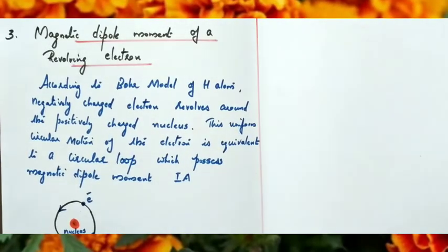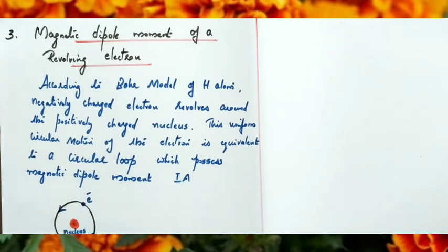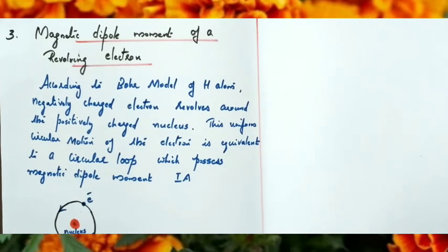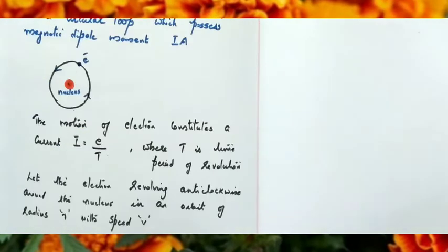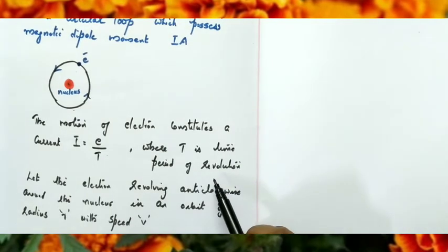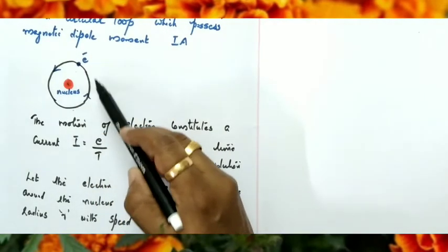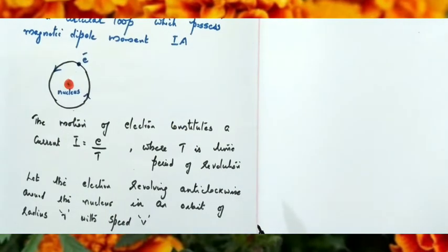Now we study the magnetic dipole moment of a revolving electron. According to Bohr's model, negatively charged electrons revolve around the positively charged nucleus. This uniform circular motion is equivalent to a circular current loop, which possesses a magnetic dipole moment M = IA. The electron revolves around the nucleus in a definite orbit.